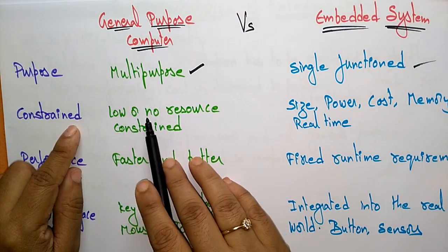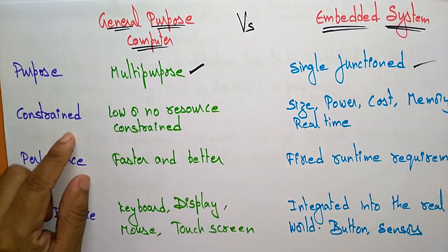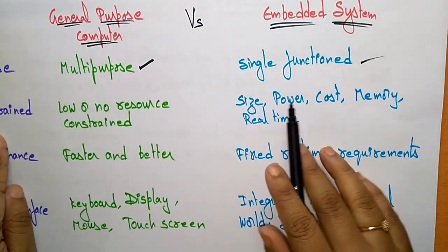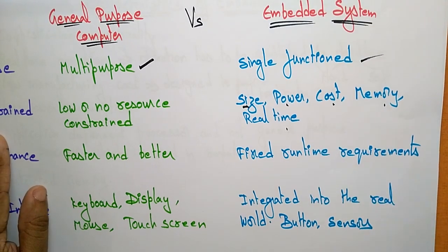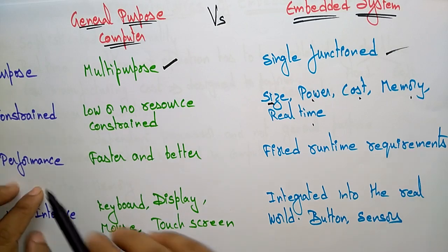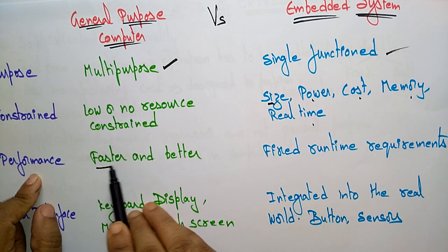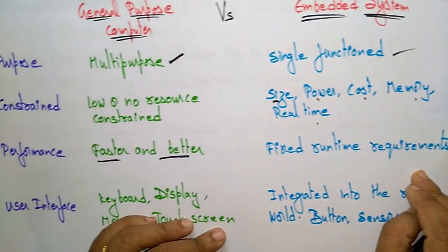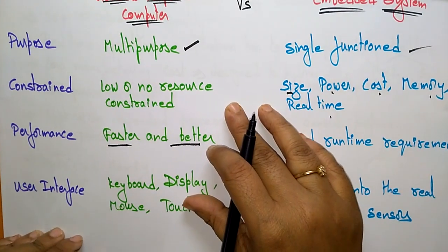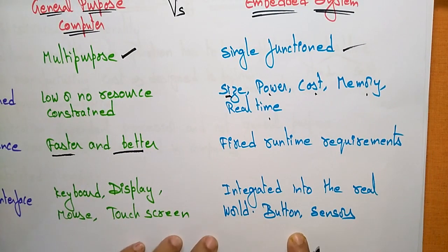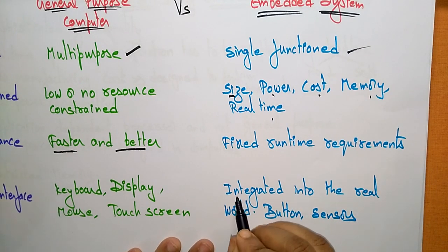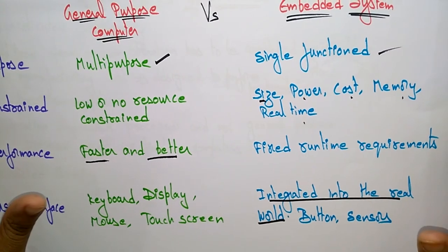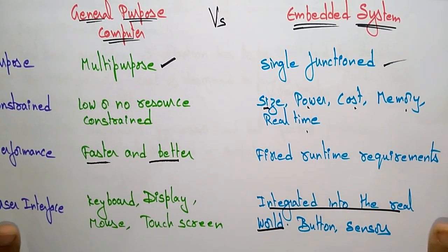Regarding constraints, a general purpose system has low or no resource constraints — you can attach and integrate many devices. In contrast, embedded systems have constraints on size, power, cost, memory, and real-time requirements. In terms of performance, general purpose computers are faster due to multi-tasking and multi-processor capabilities, while embedded systems have fixed runtime requirements. For user interfaces, general purpose systems use keyboards, displays, mice, and touch screens, whereas embedded system interfaces are integrated into the real world using buttons and sensors, with outputs like LEDs, LCDs, and Bluetooth.